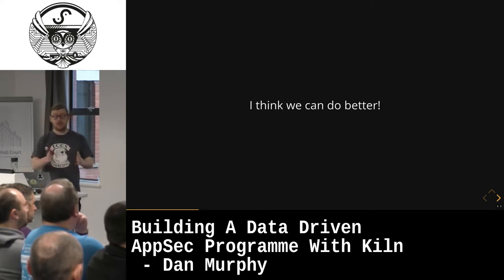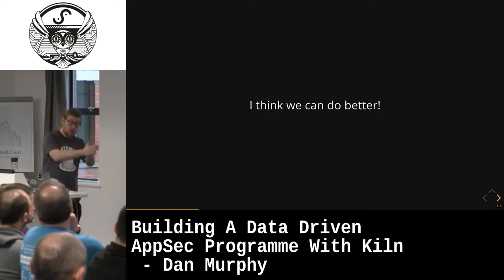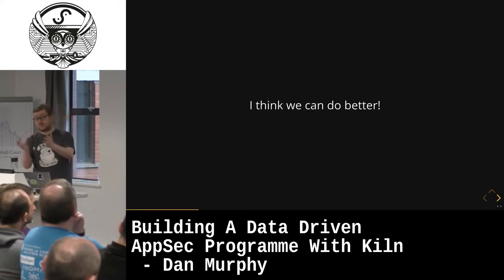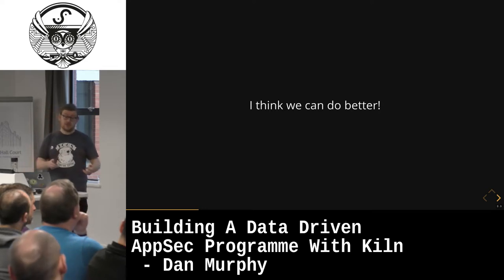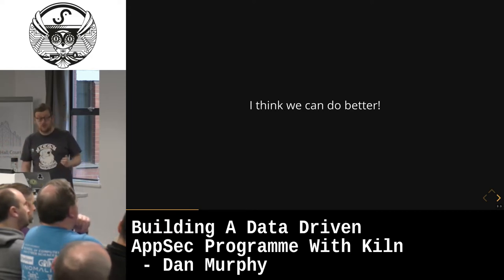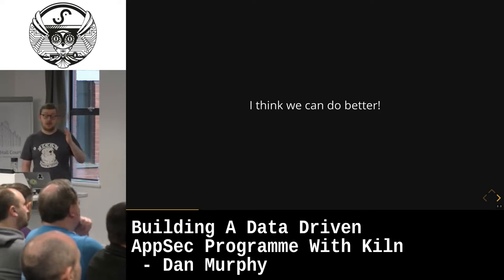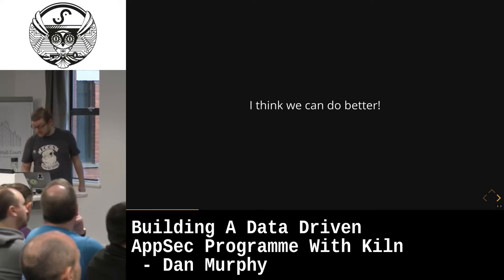A friend of mine once told me that prioritization in big companies is the difference between do we do this in Q1 or do we do this in Q3 or Q4. In smaller teams, it's the difference between do we do this now or do we not do this at all. So we've already got limited time and limited people, and we need to be better at prioritizing where we focus that time and energy.